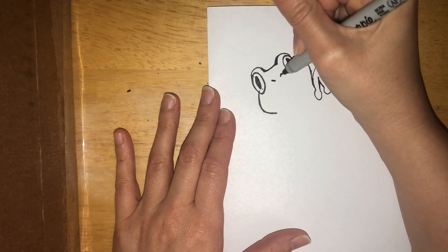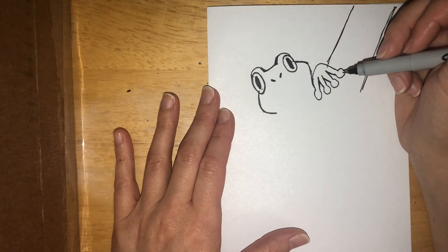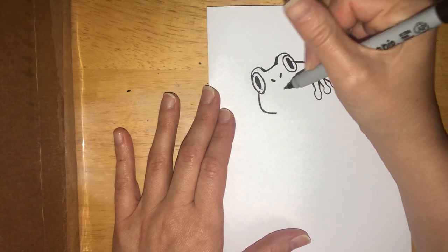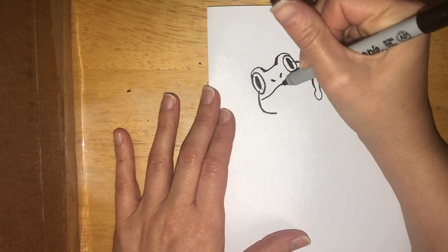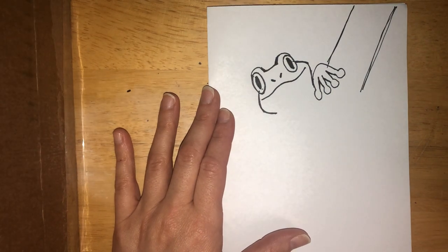You're going to do in between his eyes two diagonal tiny lines. Those are the lines for his nostrils, and then under his eyes you're going to end curving up to the nostrils. You're going to make that long big smile.